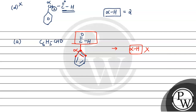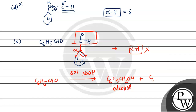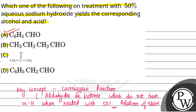Since C6H5CHO has no alpha hydrogen, in the presence of 50% NaOH base, it undergoes the Cannizzaro reaction and forms C6H5CH2OH (benzyl alcohol) plus C6H5COONa (sodium benzoate — a salt of carboxylic acid). So both alcohol and acid are formed. The condition is no alpha hydrogen, and option A satisfies this. Option A is the correct answer. Hope you understand. Best of luck.